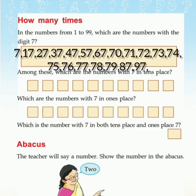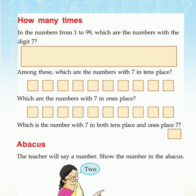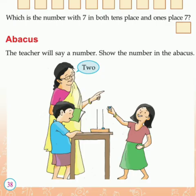Among these, which are the numbers with 7 in the 10's place? You want to write those numbers. Then the next question is: which are the numbers with 7 in the 1's place? That can be 7, 17, 27, 37 — these are the numbers in which 7 comes in the 1's place. Now which is the number with 7 in both the 10's place and 1's place? It is simply 77.